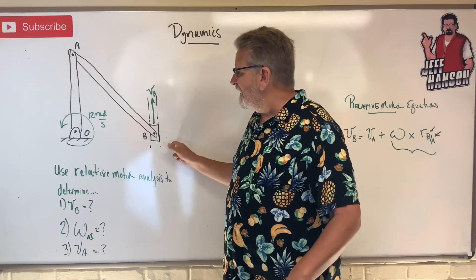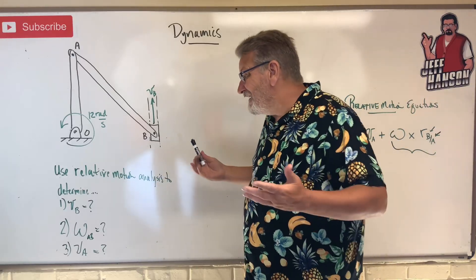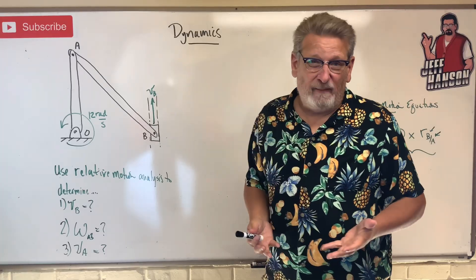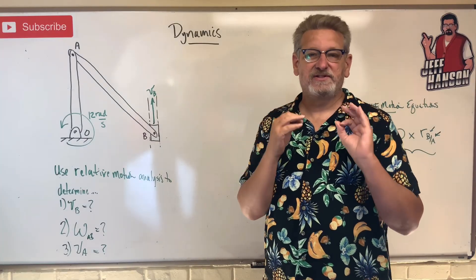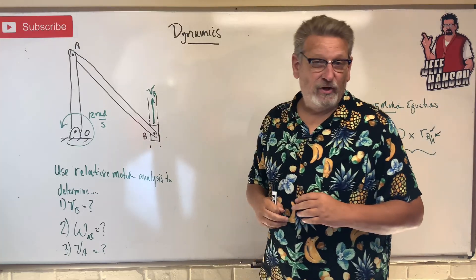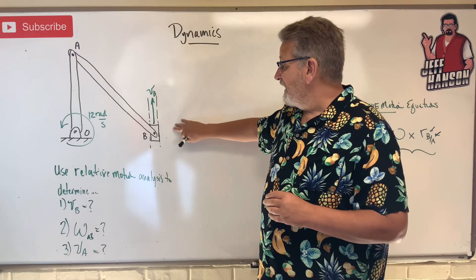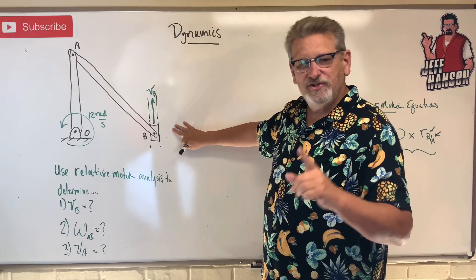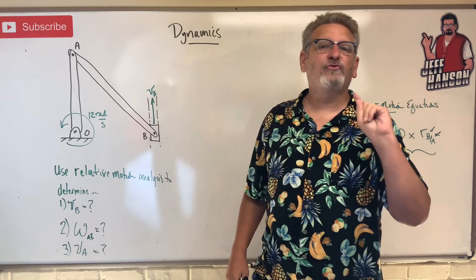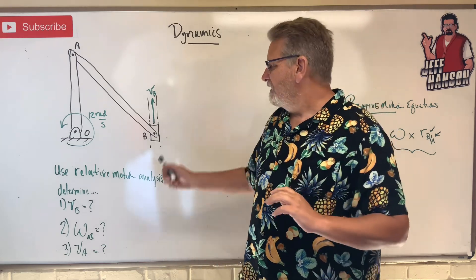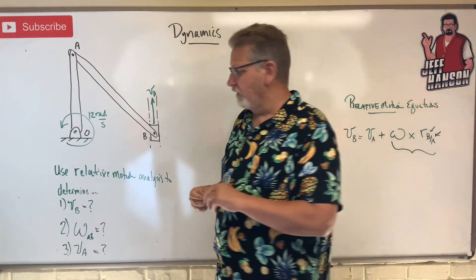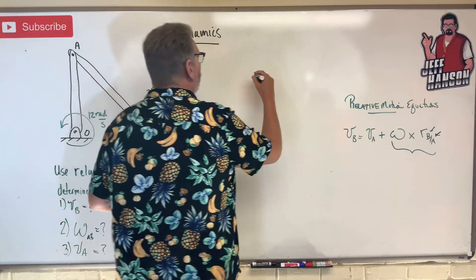We're going to solve this one now. The last one we did had just one piece — kind of simple. This one has two pieces, a little more complicated, but we're going to solve it the exact same way. We'll do it just like we did in statics — this looks like a good old-fashioned frame problem. Let's break it into two parts and draw a kinematic diagram of each piece.